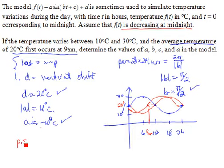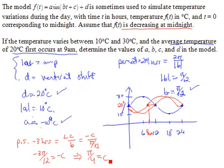So our phase shift needs to be negative 3. Phase shift is computed by doing the opposite of c divided by b. That's the opposite of c divided by pi over 12. If I multiply both sides by pi over 12, I see that negative 3 pi over 12 equals negative c, so that simplifying, I get pi over 4 equals c.